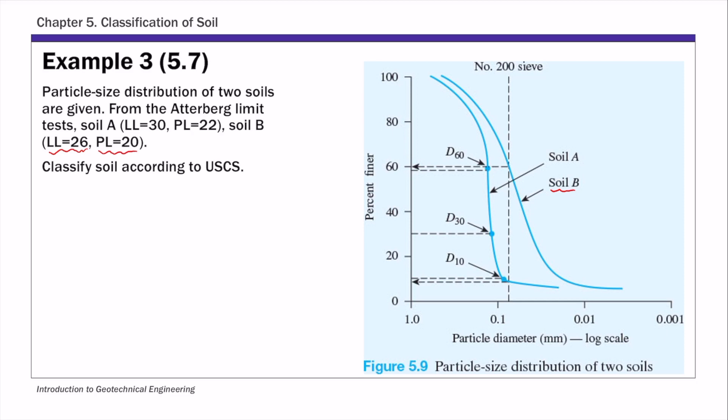So the first thing again, we're going to get the percent of fine, coarse, gravel, and sand for soil B. And for soil B, the percent fine is basically the percent finer than the number 200 sieve, which is again 0.075 millimeter in diameter.